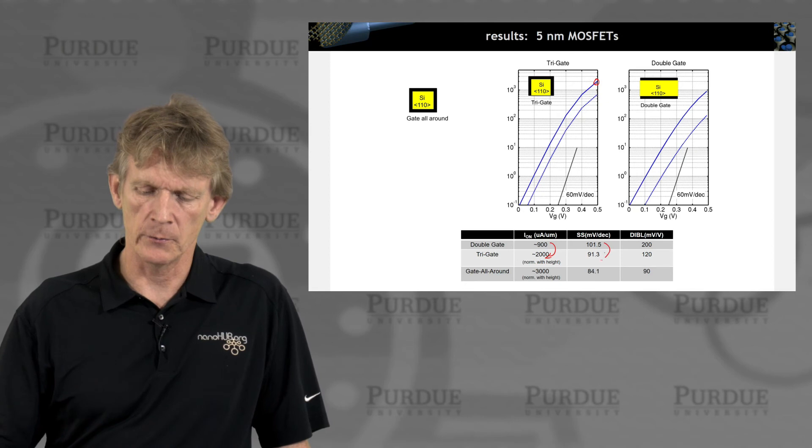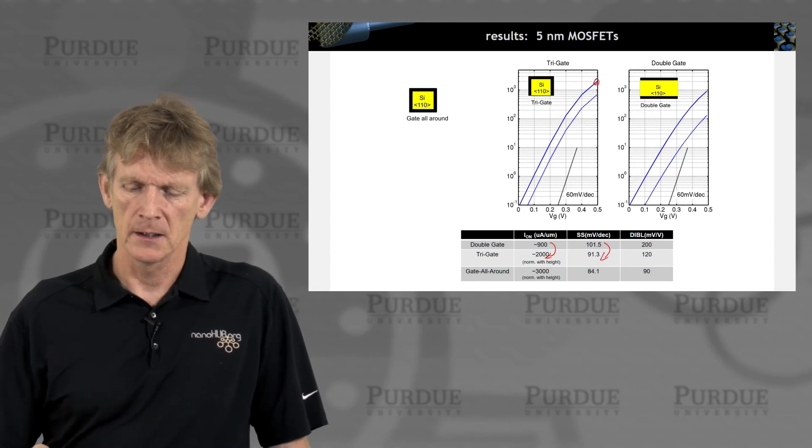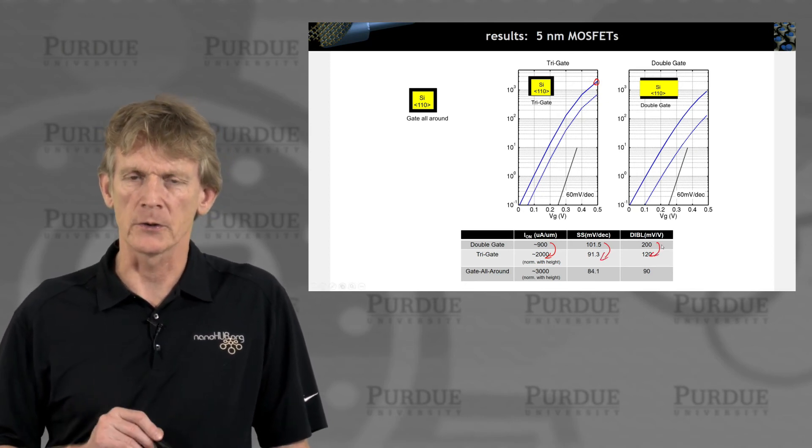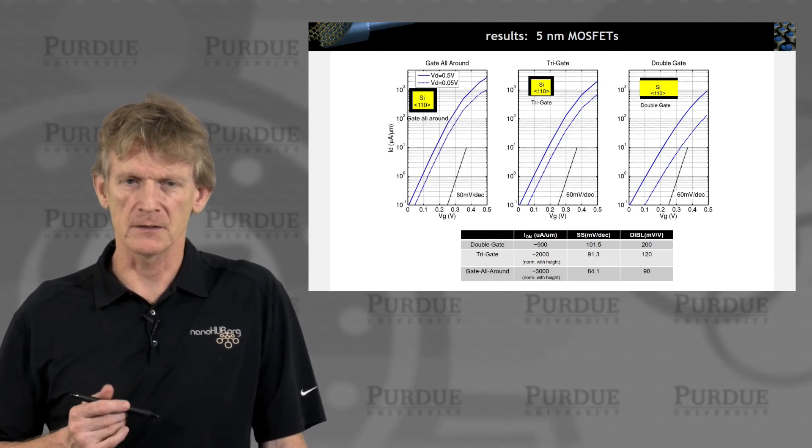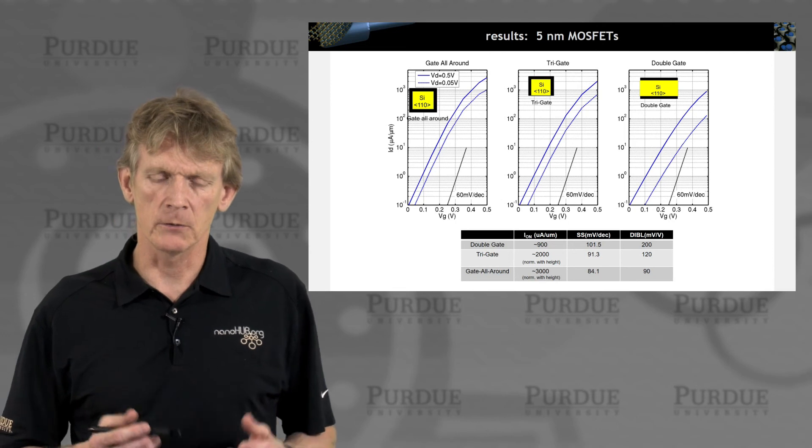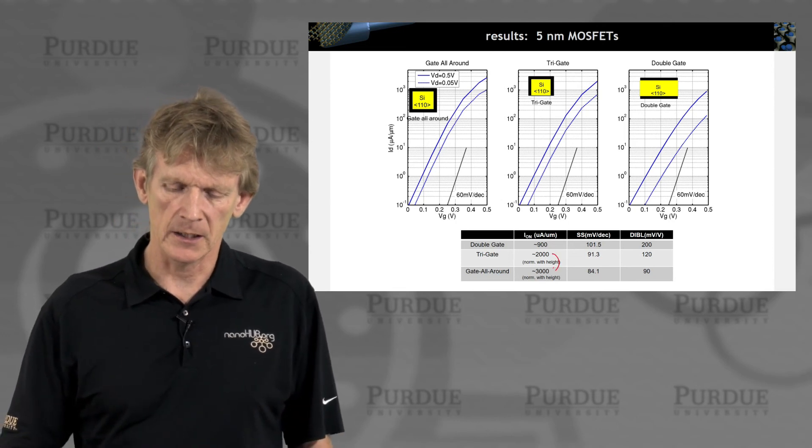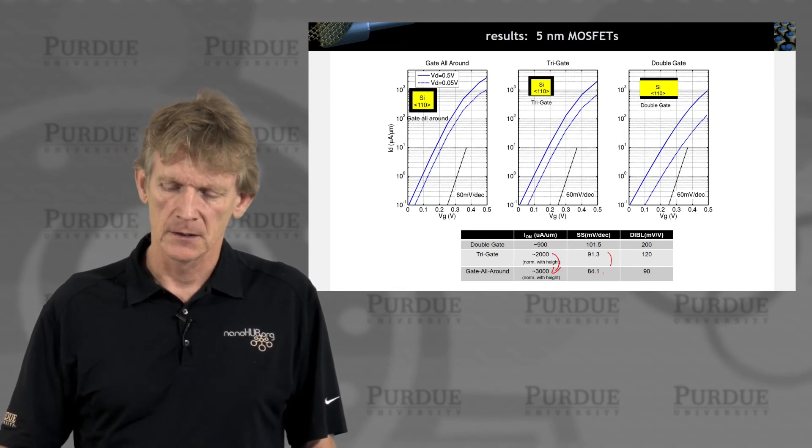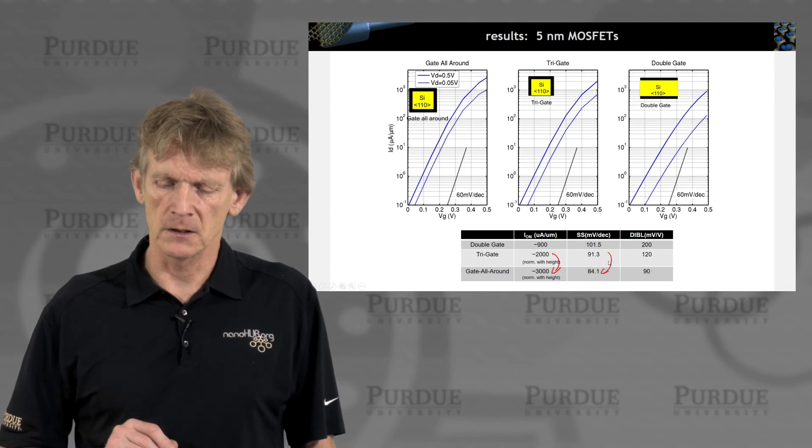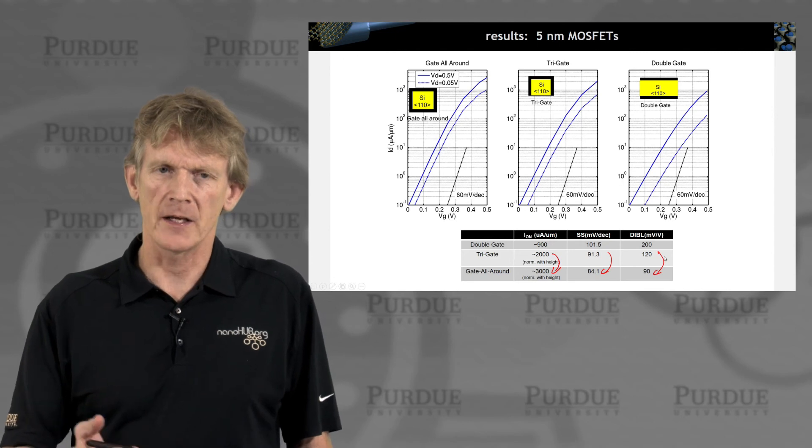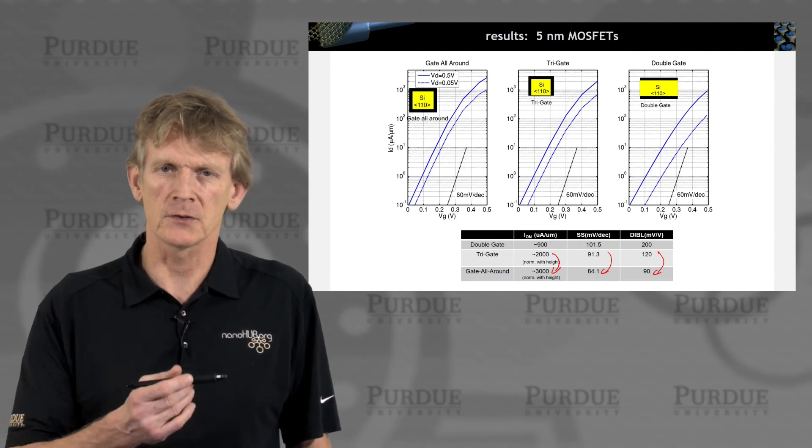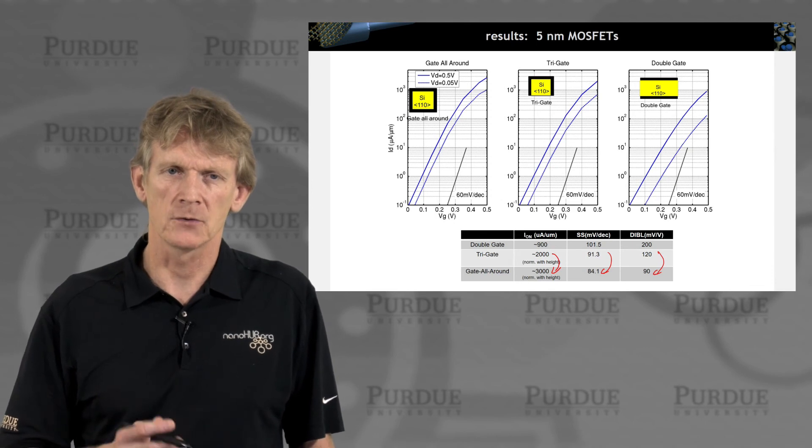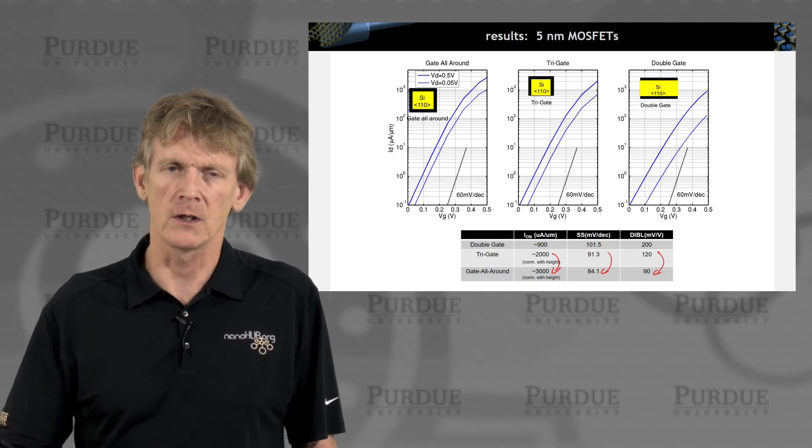Now, if you look at a tri-gate structure, you can actually get more current out. So the peak goes up from 900 to 2000. Your slope becomes steeper from 101 to 91. And also the drain and used barrier lowering gets smaller. Now, if you look at the gate all around, that has the perfect electrostatic control, so to speak, where you can really shut off, you get actually more current out. The sub-threshold also decreases, and also the dibble decreases. So this is, out of that material class, this is the best performing device here. But it's also, of course, the hardest one to make, to really make a gate that goes all around this wire.